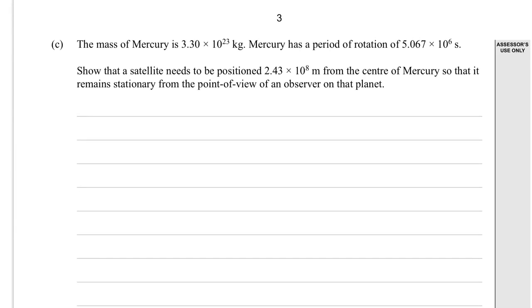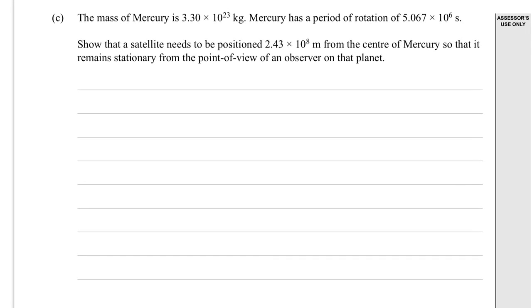C, the mass of mercury, mercury this time, is 3.30 times 10 to the 23 kilograms. Let's just make a circle around there. That's the mass. Mercury has a period of rotation, so T. So again, no, we don't have that. Show that a satellite needs to be positioned that distance from the centre of mercury, so that'll be a radial measurement, so that it remains stationary from the point of view of an observer on that planet.